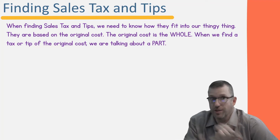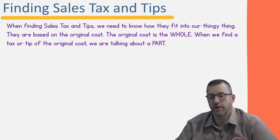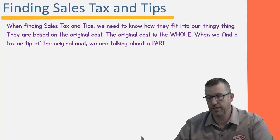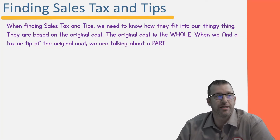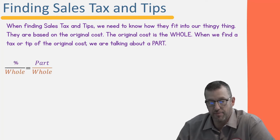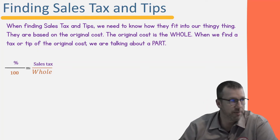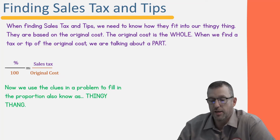When finding sales tax and tip, the proportion is percent over 100 on one side, and part over whole on the other. The whole is the original cost — everything before tax or tip is added. When you buy stuff in a store, it all adds up to an original cost, and sales tax comes on top of that. Similarly at a restaurant, the food and drinks add up to an original cost and the tip goes on top. So tax and tip are the part, and the original cost is the whole.